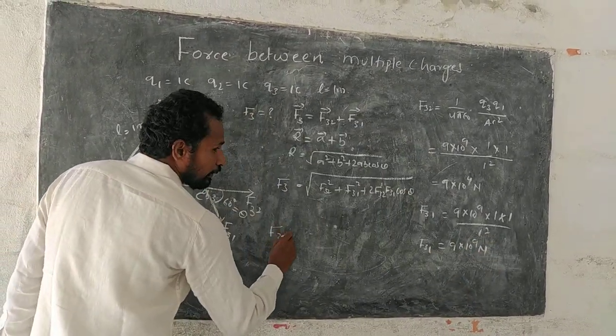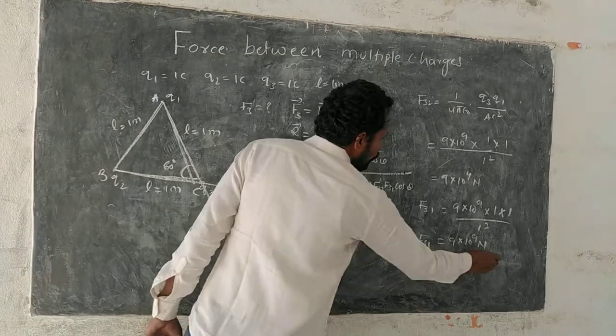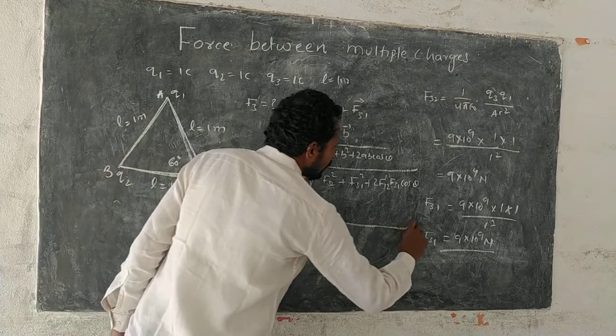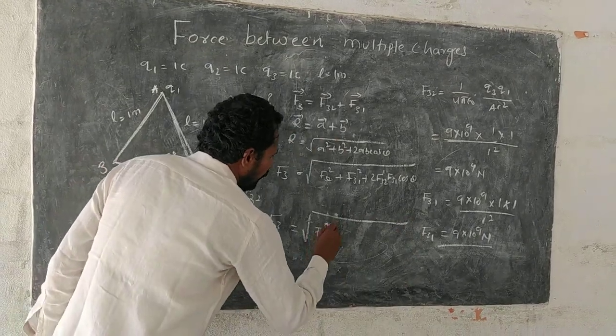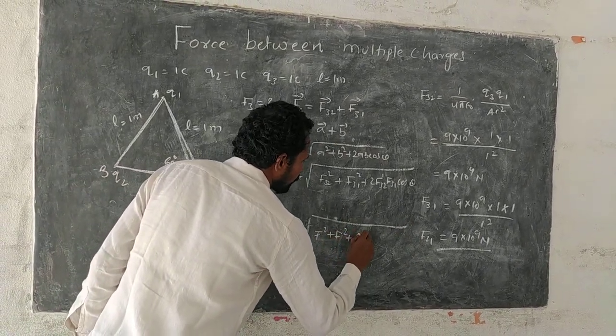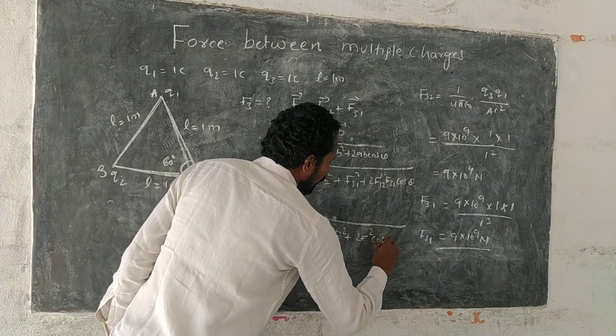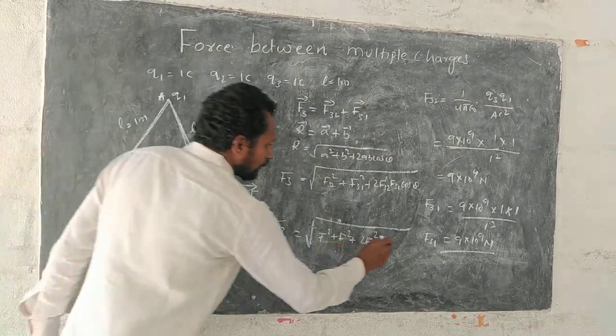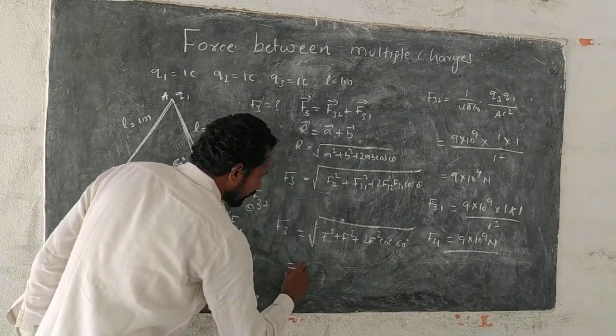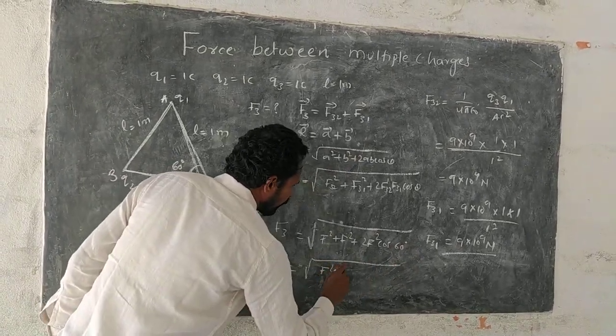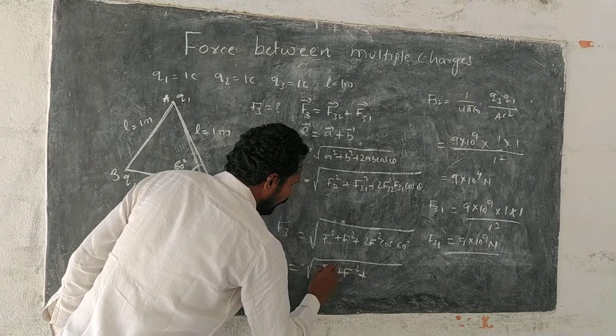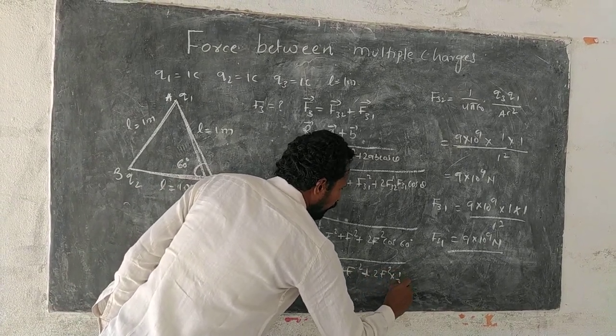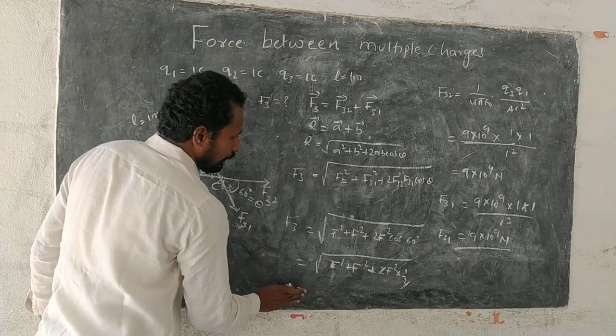And this F3 equals, these two forces remain same. Then take it as just F, and this will be F squared plus F squared plus 2F squared cos 60. Because this theta is 60 degrees, cos 60 is half. So F squared plus F squared plus 2F squared into 1 by 2, the 2s cancel.